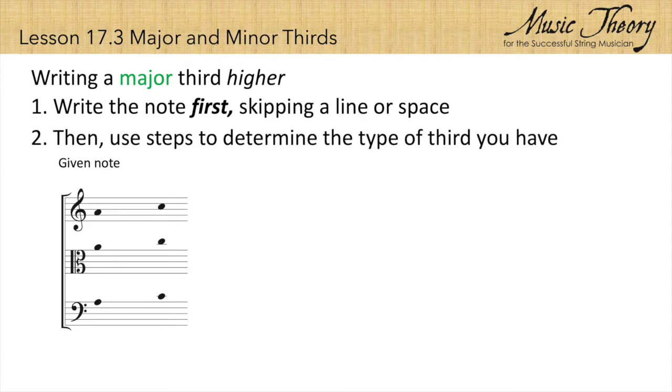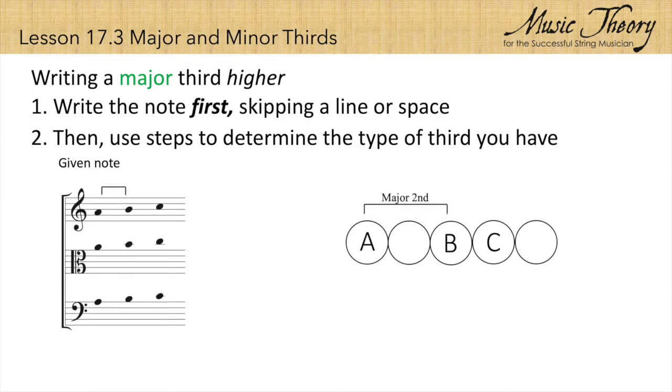Then we use steps to determine what type of third we have. From A to B is a major second. B to C is a minor second. However, the exercise asks us to write a major third.